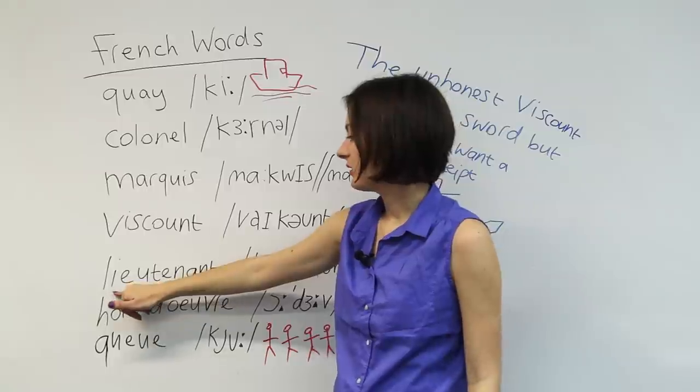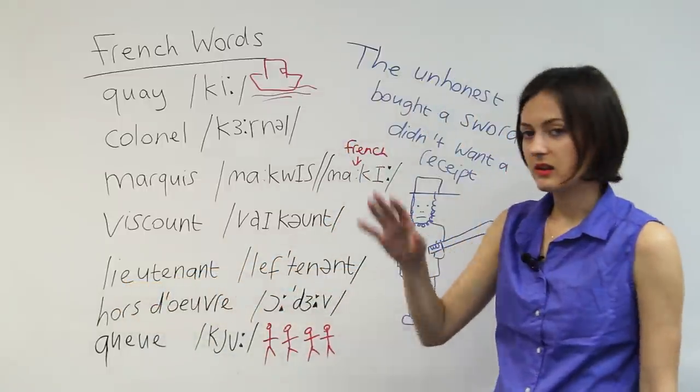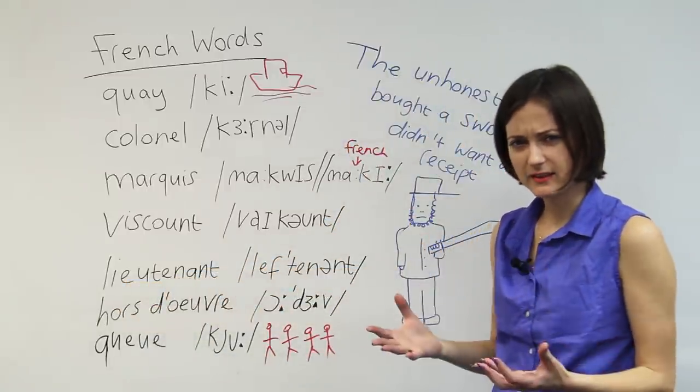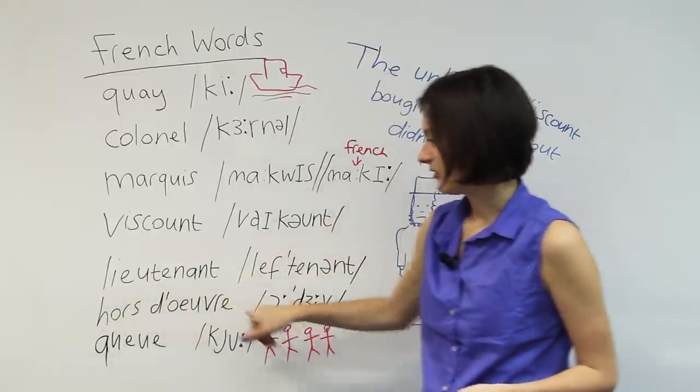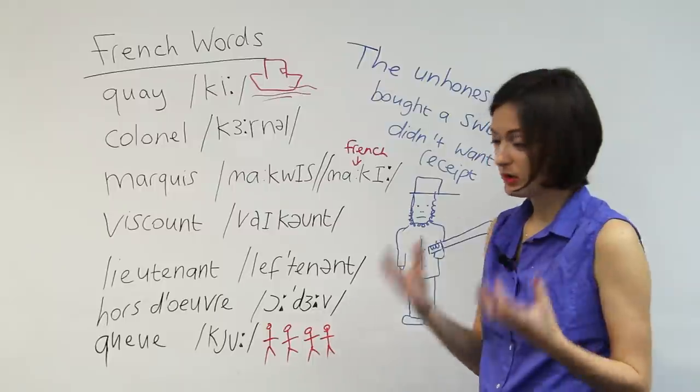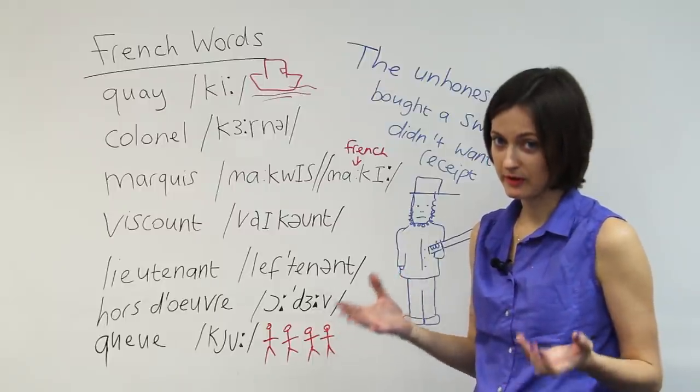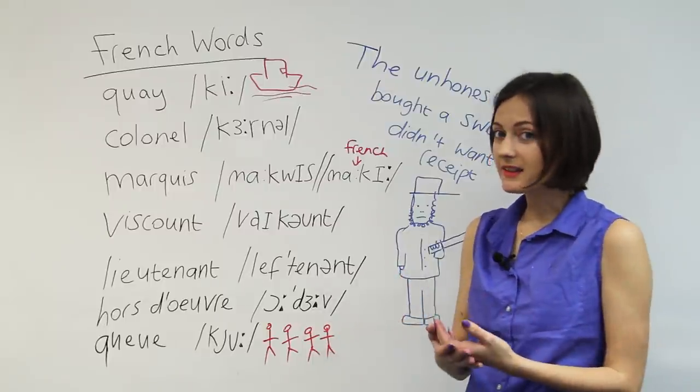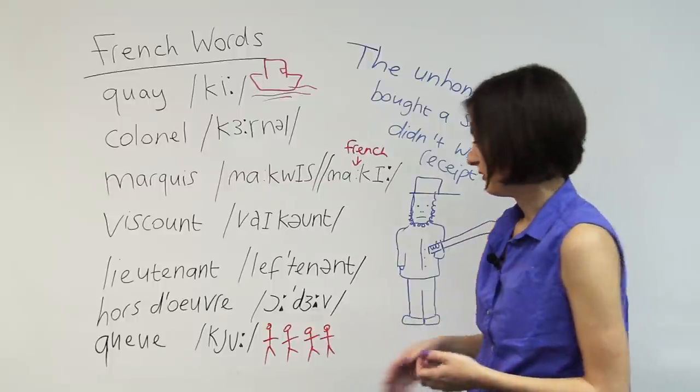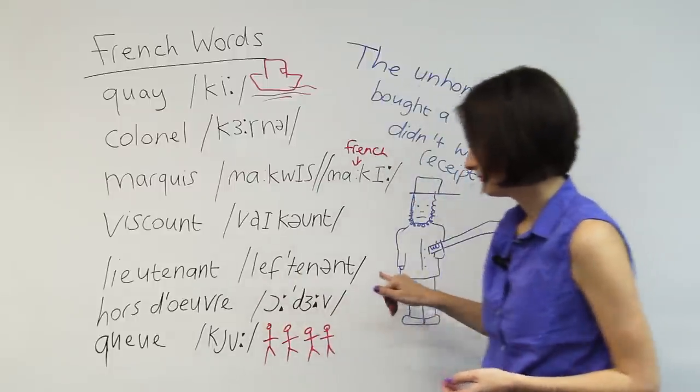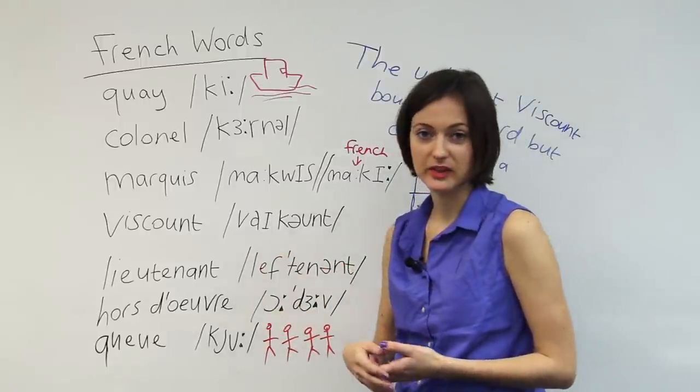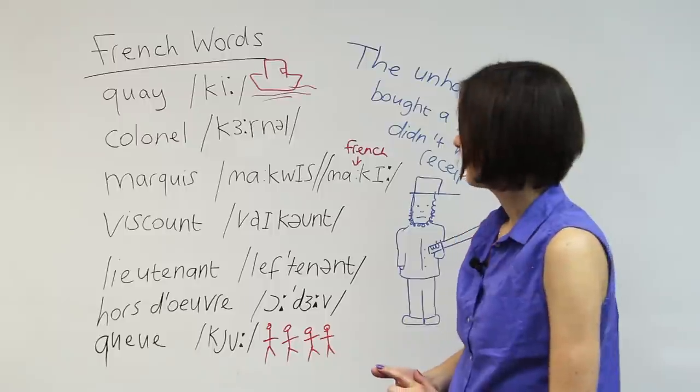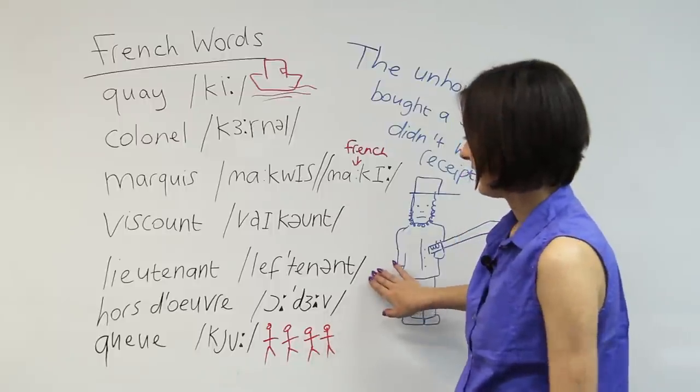Moving on. We have different pronunciation for this word in American English and British English. It makes sense in American English because I can read the word and say it correctly. Lieutenant. American English. But in English English, we need to make it a little bit more difficult. So we say lieutenant. I don't know why it comes out so different, but it's really confusing.